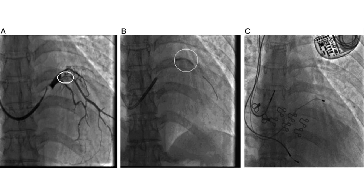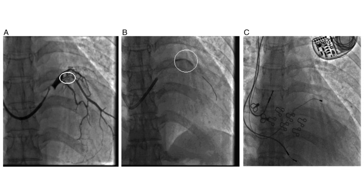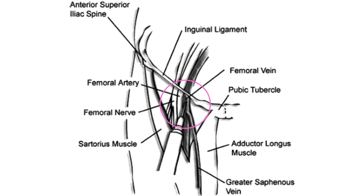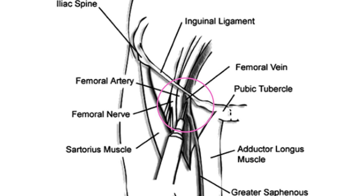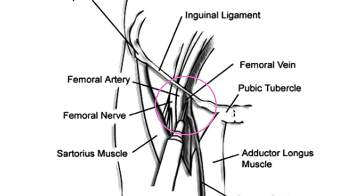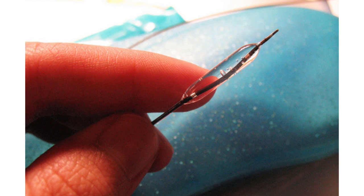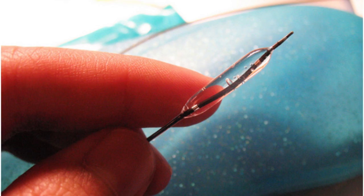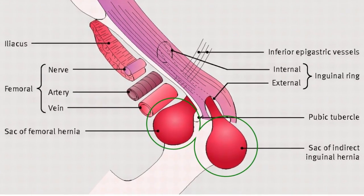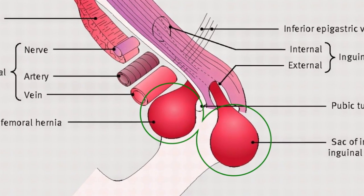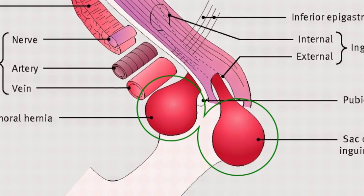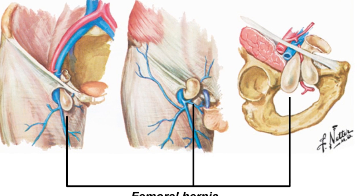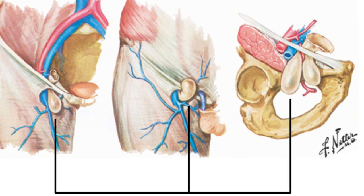The femoral vein allows for femoral venopuncture when there are no superficial veins that can be aspirated in a patient. The femoral triangle also helps in the clinical diagnosis of femoral hernia, which manifests clinically as a lump or bulge in the area of the femoral triangle.